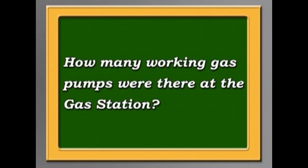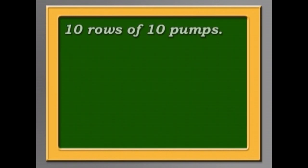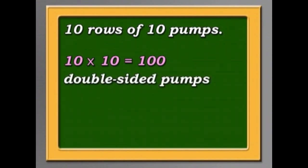How many working gas pumps were there at the gas station? Well, to do this, we first have to work out how many gas pumps there were altogether. There were 10 rows of 10 pumps. What does that make? 10 times 10 is 100. But each pump is double-sided. So there's a pump on one side and a pump on the other side. So we have to multiply the 100 by 2.